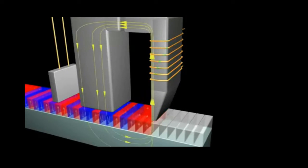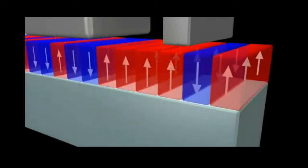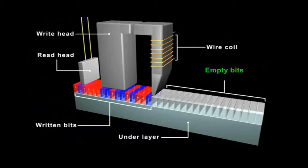The red blocks have north poles facing up and the blue blocks have north poles facing down. These are what the computer recognizes as ones and zeros. Gray blocks are the empty bits that have not yet been magnetized.